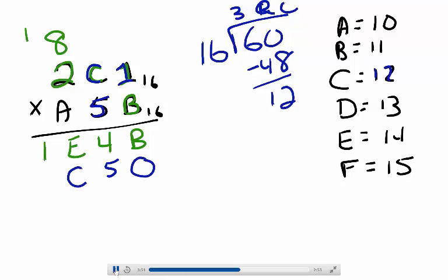So my remainder C goes here, then I carry the 3, which is 3 groups of 16. 2 times 5 equals 10, plus 3 gives me 13, and I write that as D.